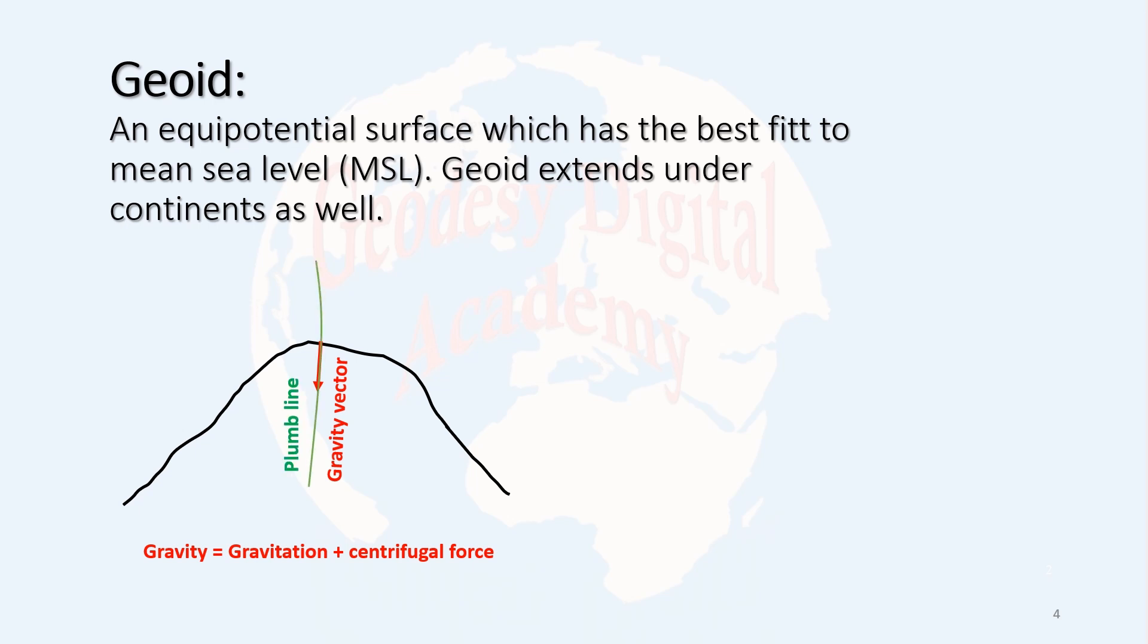The direction of this gravity vector is called plumb line. Plumb line is not a straight line because the mass inside the Earth is not homogeneous. Some places we have heavier material than other places. Some places we have mountains, some places we have sea valleys. There are different mass distributions inside the Earth. For a small area, its curvature is not very sensitive.